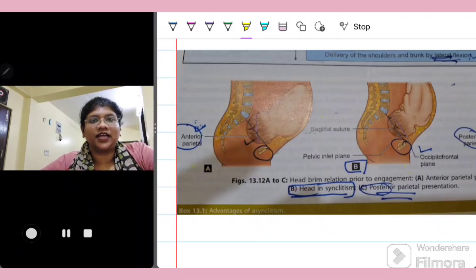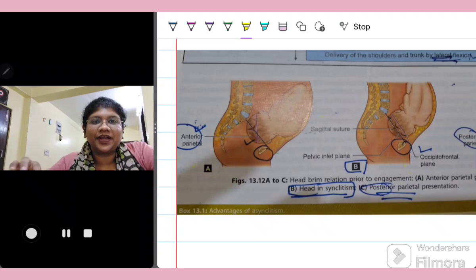But in nature, in reality, the head does not follow this rule. The fetal head, that is the sagittal suture, tends to deflect sometimes anteriorly or sometimes posteriorly. And this deflection, anterior or posterior, is known as the asynclitism.